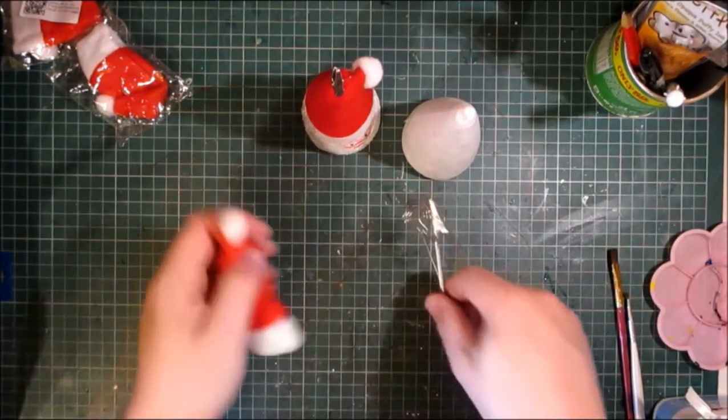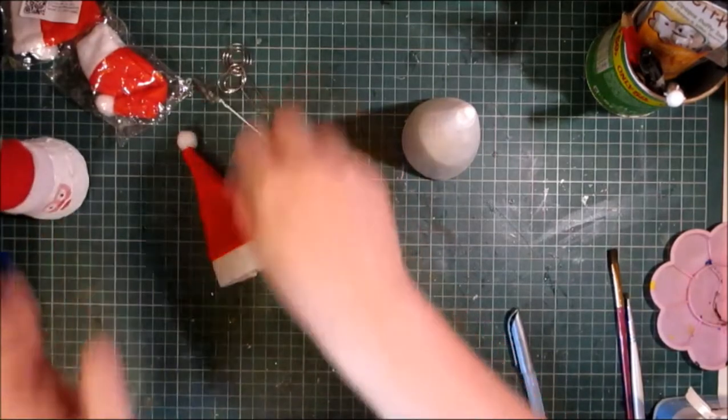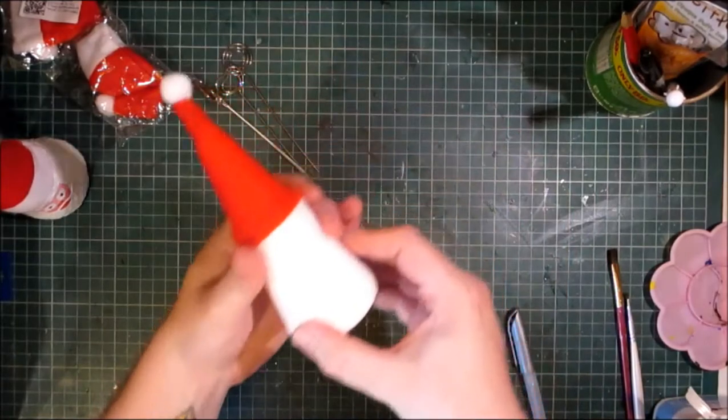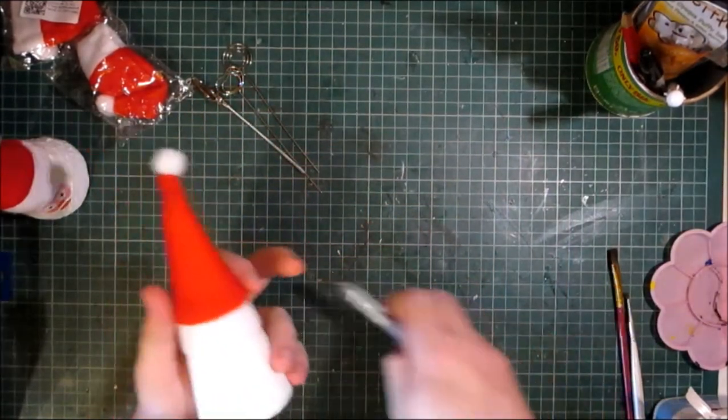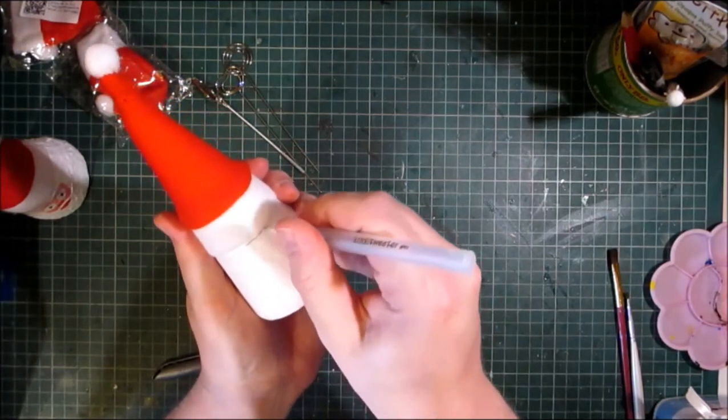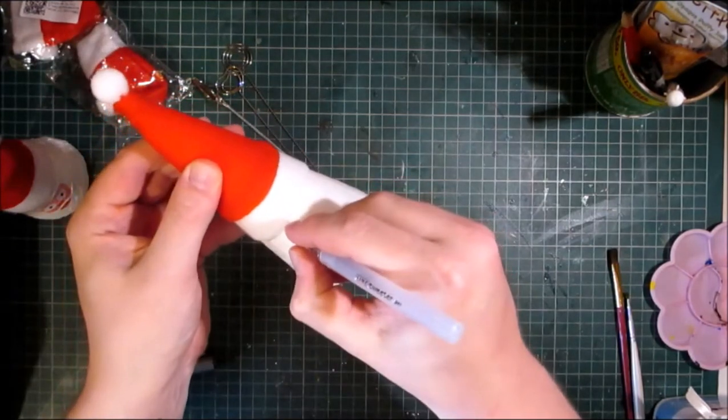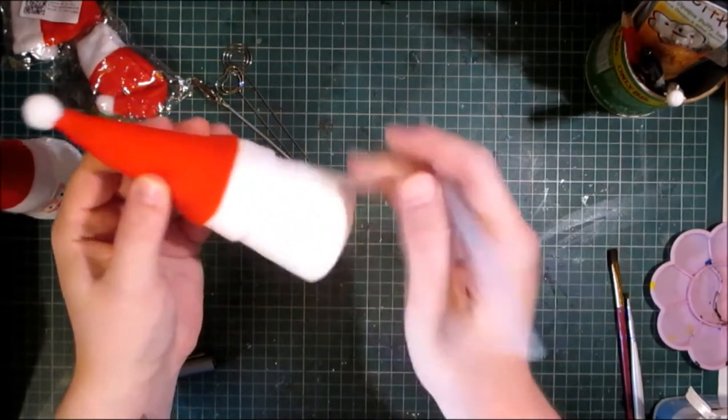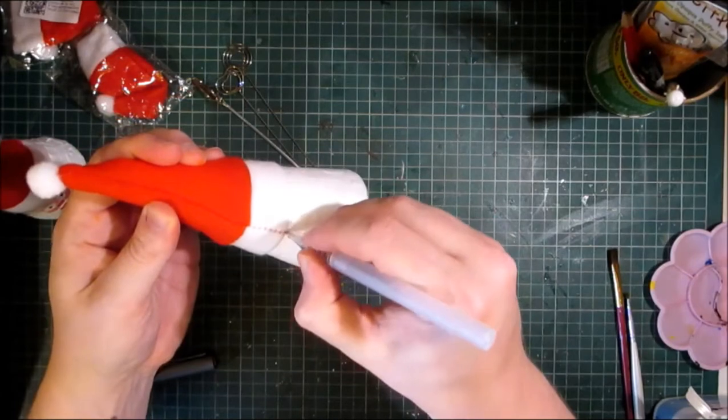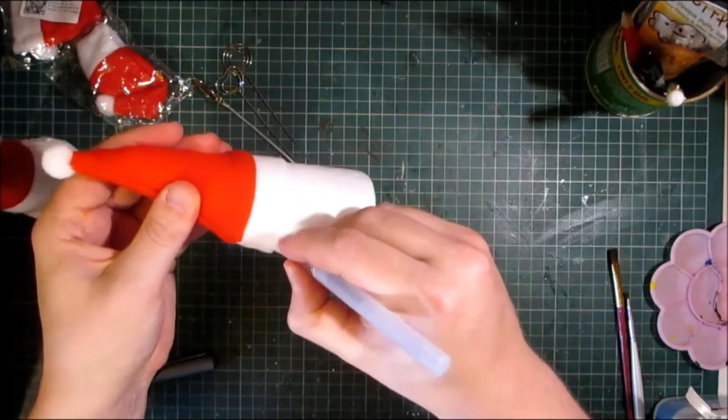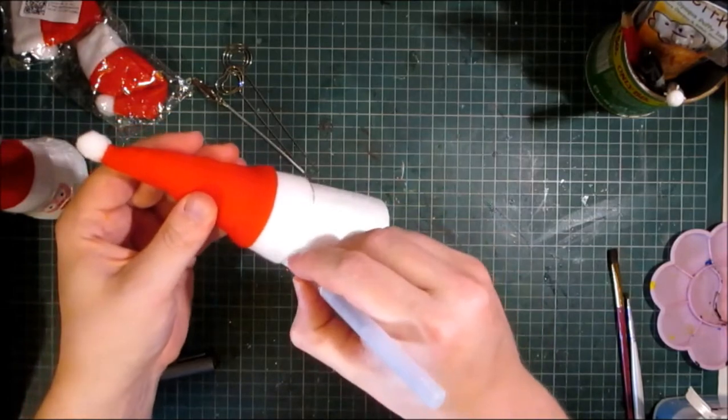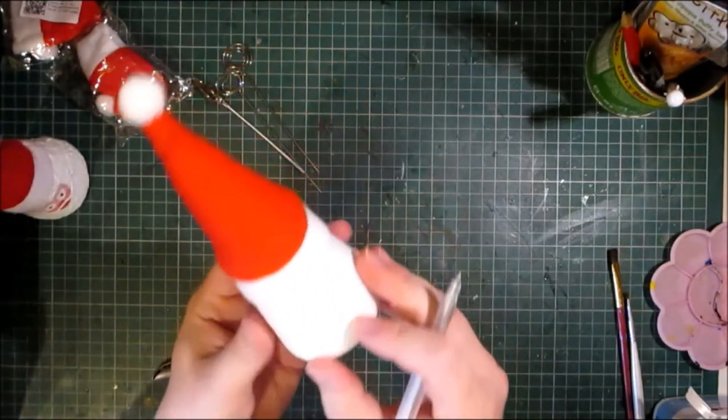So the first thing we need to do is put our little hat on our polystyrene form. And then with a pen, I'm going to just roughly draw a line where the hat comes to. Now I'm just using the silver glitter pen, which is also available from my store, but you can use any pen. I used a black Biro on that one.